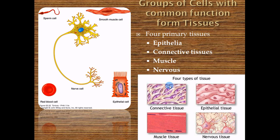Muscle tissue is primarily for contraction — for moving things. Cardiac muscle moves blood by pumping. Smooth muscle lines the GI tract to propel food through the digestive system. Skeletal muscle moves your skeleton. Nervous tissue's primary function is electrical communication over long distances — sending signals from your brain down your spinal cord and out to your fingers and toes. The longest cell in the body is actually a neuron, about three feet long, going from your sacrum all the way to the tip of your toe.